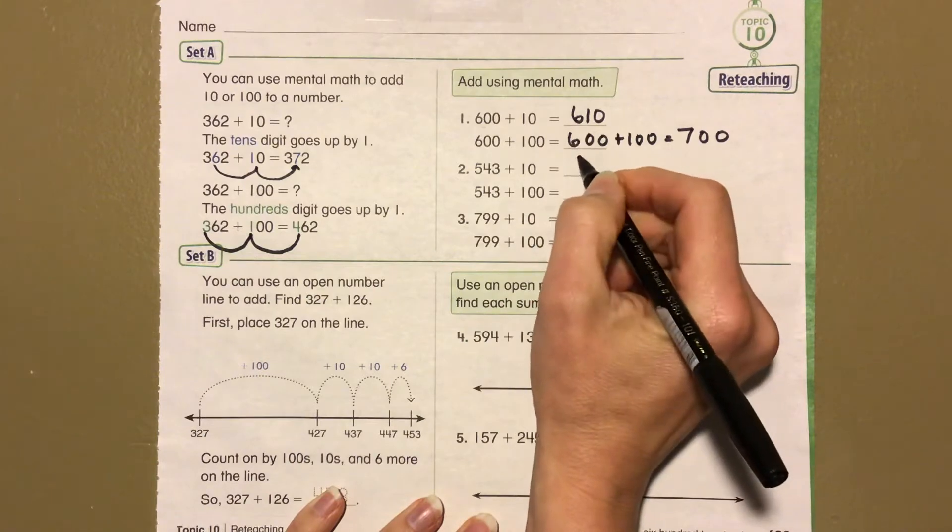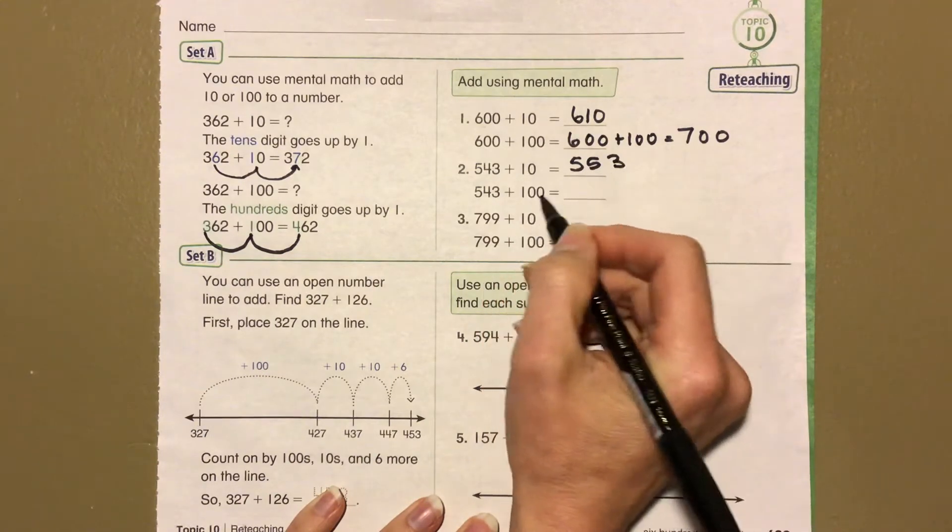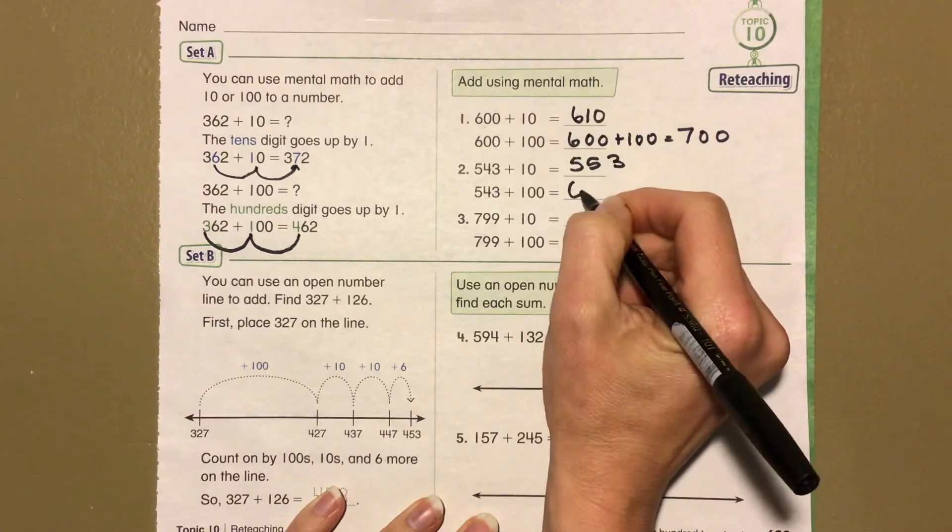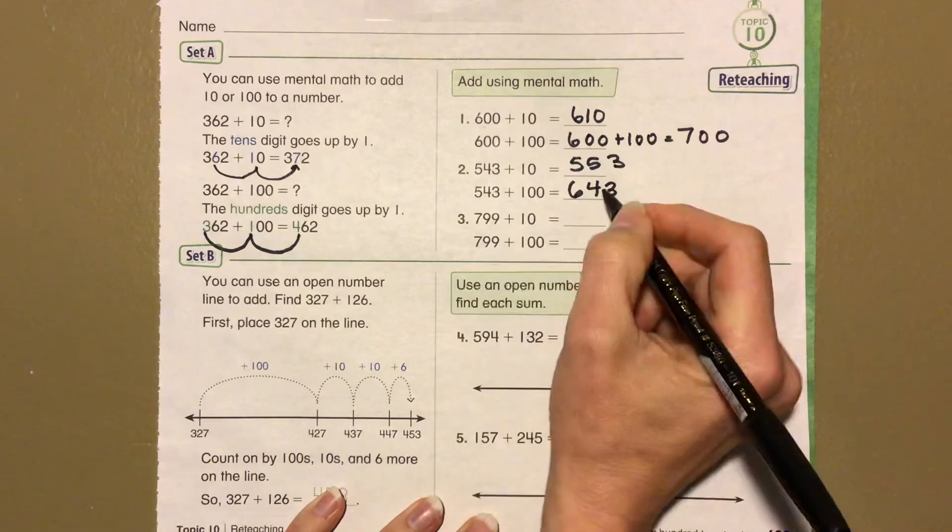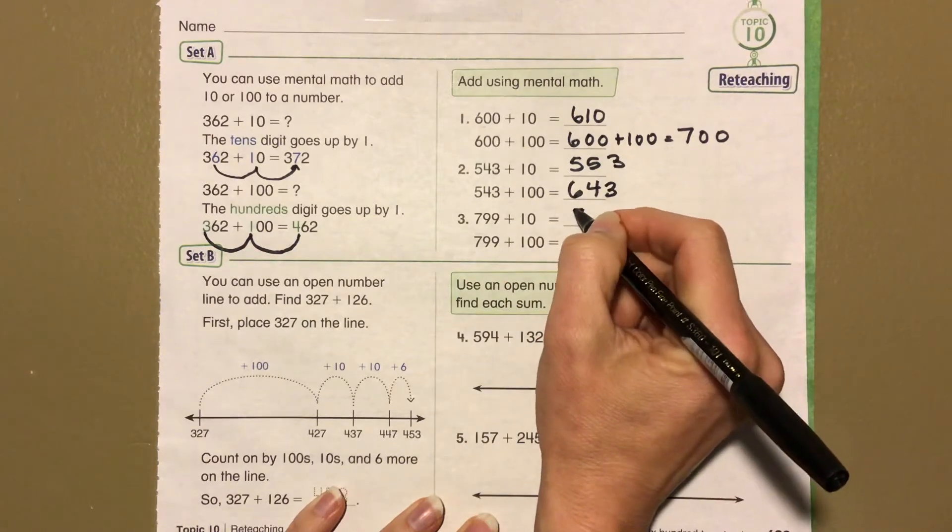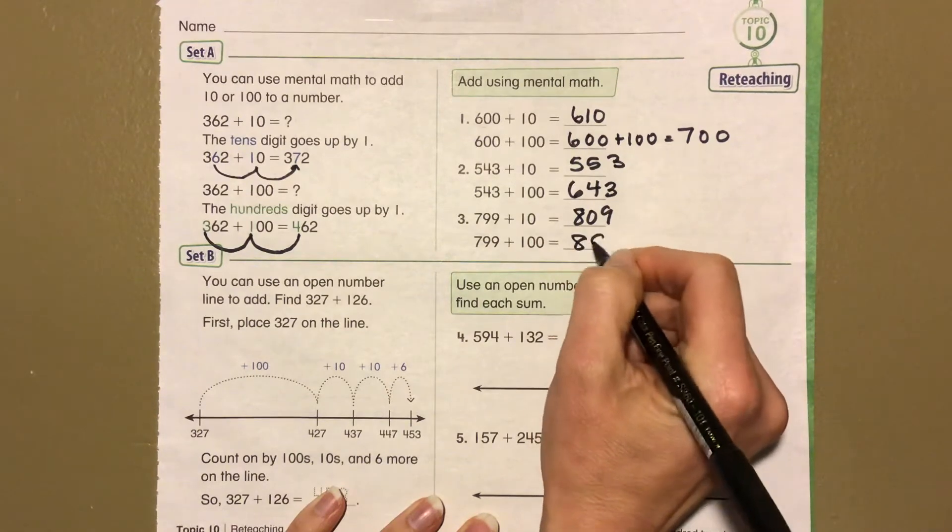543 plus 10 is 553. Let's see, we're adding 10 here so we get 6. We're getting 100, 643. All right, so we're just using this to go through and check. 809 and 899.